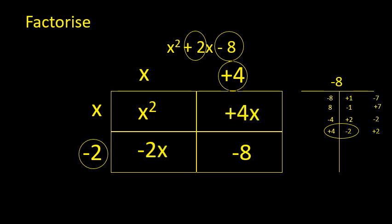Let's fill in the rest of my window: plus 4x and minus 2x. Let me check that when I collect all of my terms, I do indeed get the original expression — and I do. If I add 4x and minus 2x, I get plus 2x. So what I have left to do is write my final answer. In the first bracket is x plus 4 (the two terms from above the window), and in my second bracket I have x minus 2 (the two terms along the left-hand side of the window). And so I have factorised my expression.